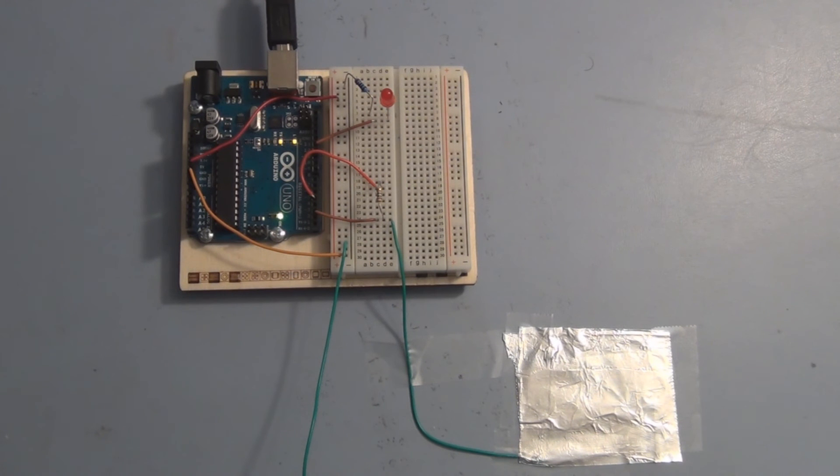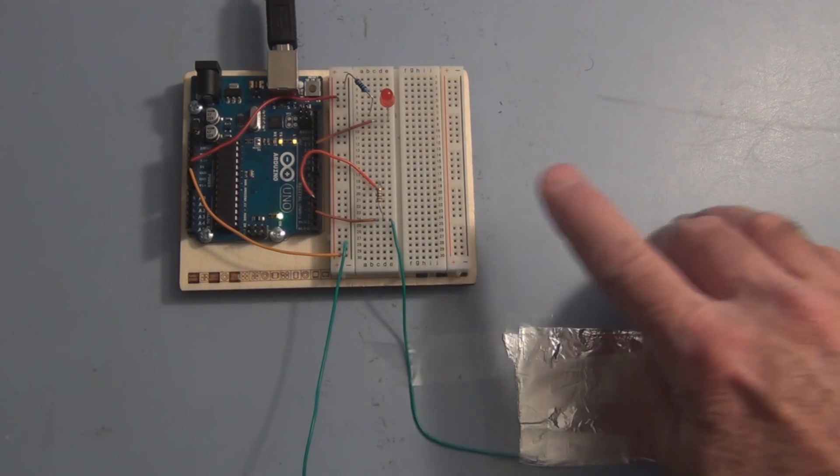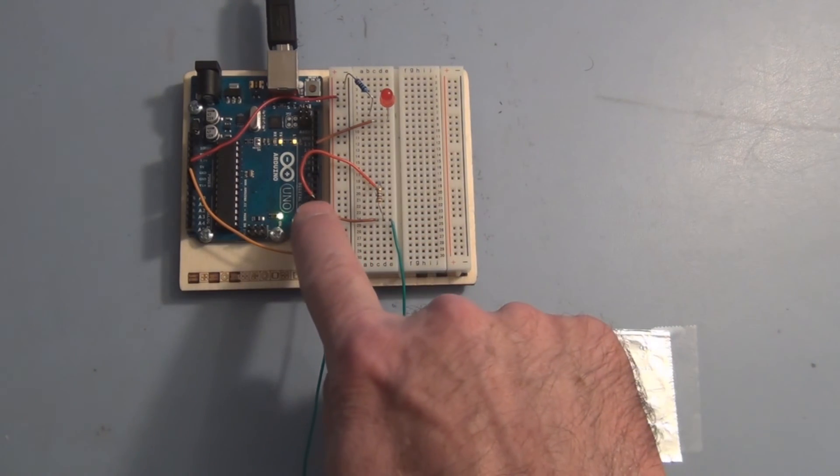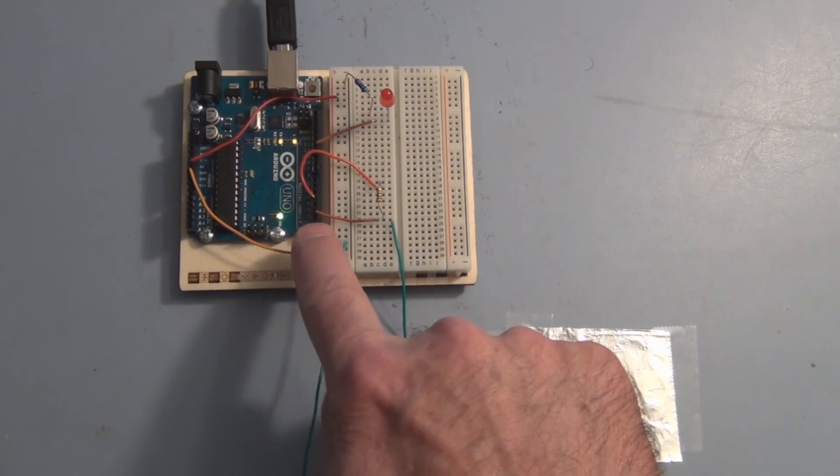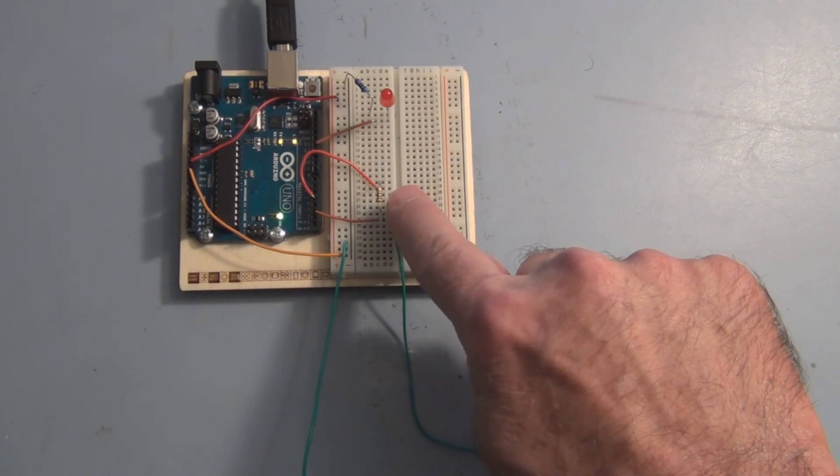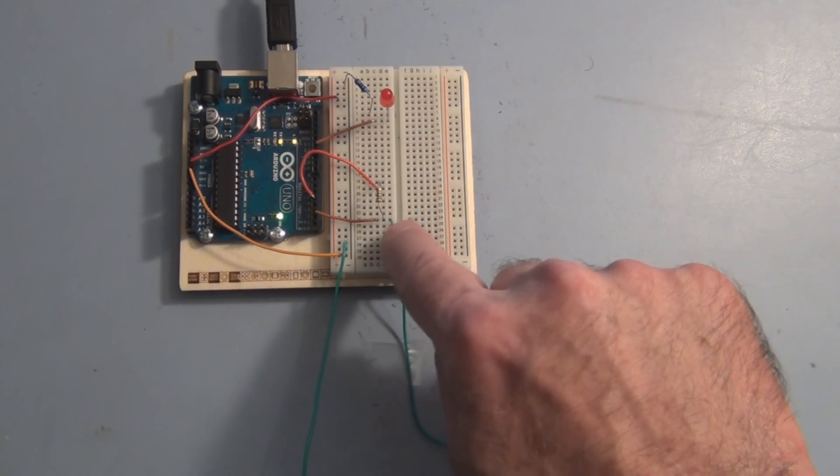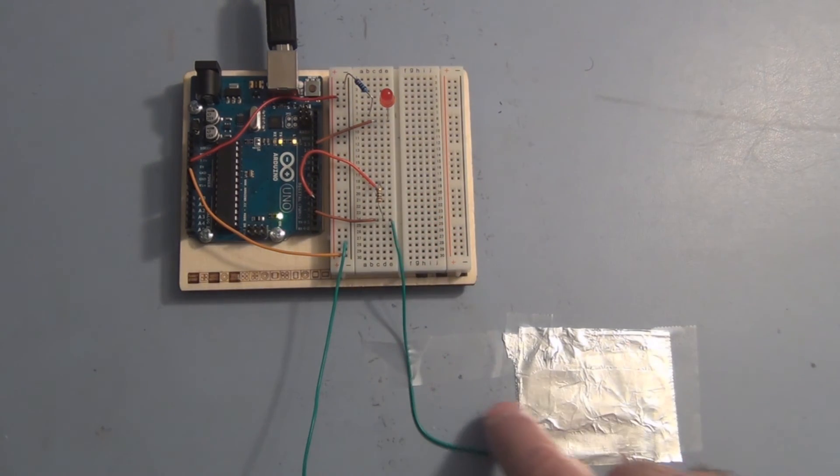Basically, with the use of a capacitive sensor library, we define a sender pin and a receiver pin, and we have a one megaohm resistor here. I just have this wire that goes to this piece of foil.